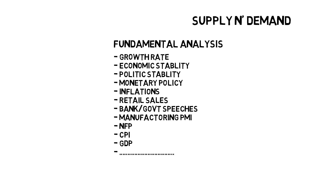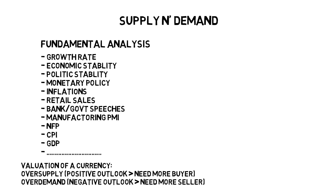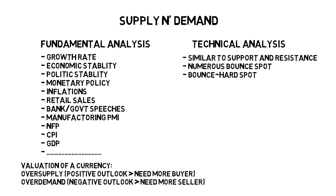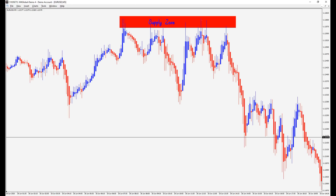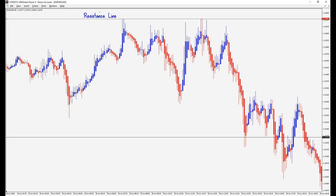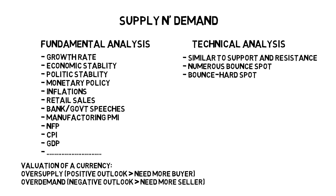When you talk about supply and demand on fundamental analysis for currencies, that's based on economic growth factors — a vast topic requiring you to process large sums of data like country policy, government stability, monetary policies, cultural employment rate, retail sales, and so on. On technical analysis, supply and demand are sometimes interpreted as support and resistance, which share similarity. Supply and demand are based on a broader zone, while support and resistance are most often on a specific price level.